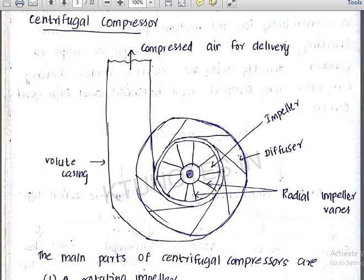What is the difference between a compressor and a pump? The pump handles liquid, while the compressor handles vapor. Air is a vapor, so the compressor is used for vapor quantities.